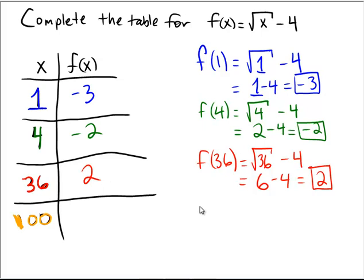And finally, let's do a real big number, a three-digit number. We'll find out what the function evaluates to when we put in the value of 100. So, again, square root of the number that's being put in, which is 100, minus 4.